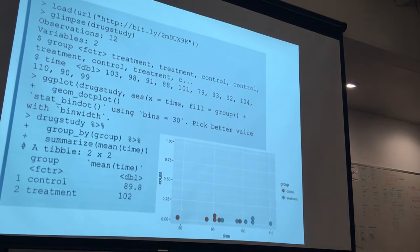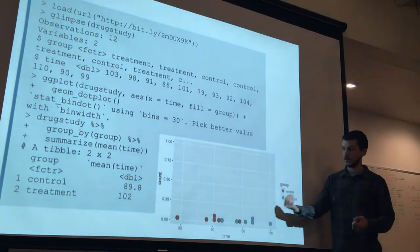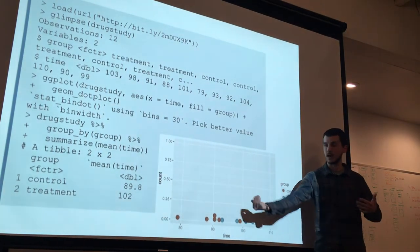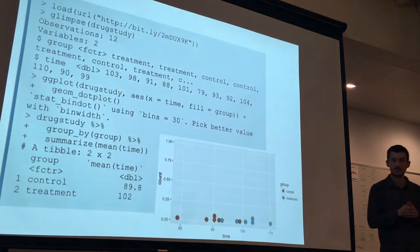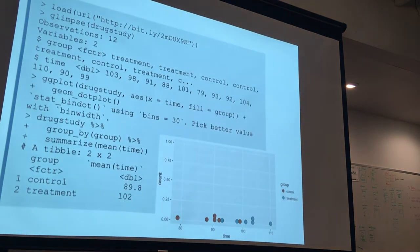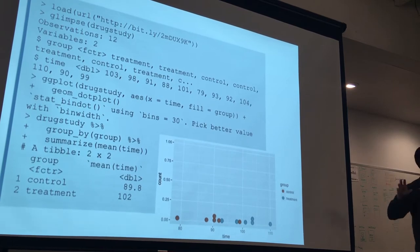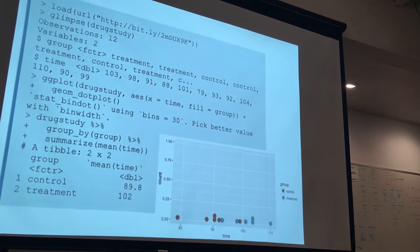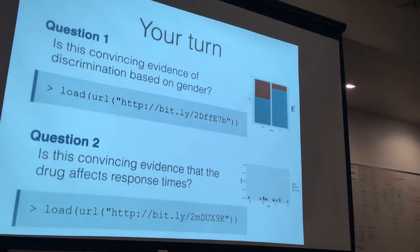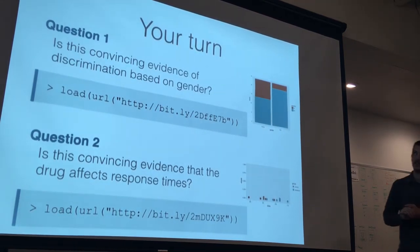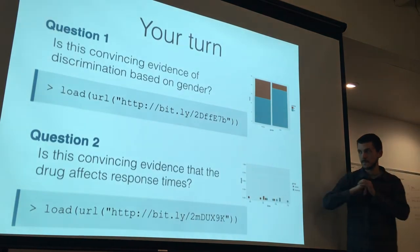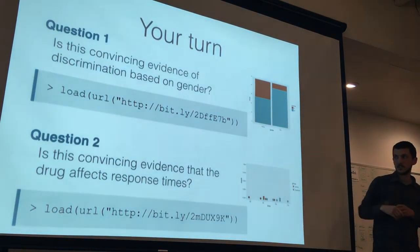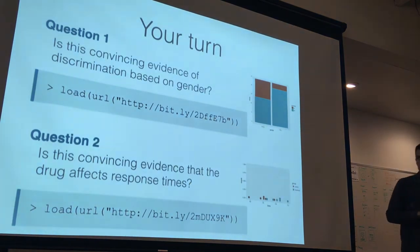If we want to compute some statistics, we can compute the two averages: the average response time of the treatment group and the control group. We get roughly 90 milliseconds versus about 100 milliseconds — some difference in the means. Now it's time to do some inference. The two inferential questions are: does this constitute convincing evidence of gender discrimination? And is this convincing evidence that the drug affects response times?